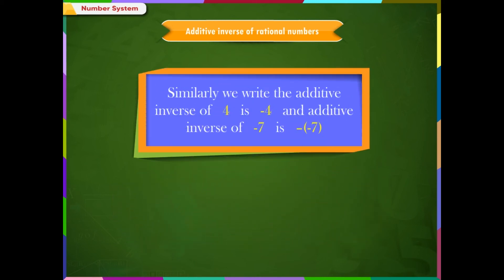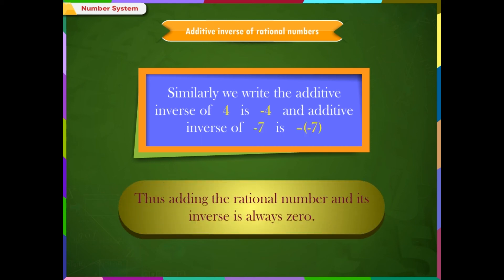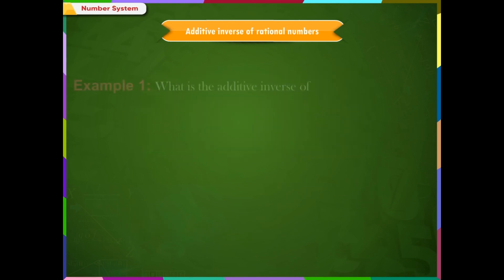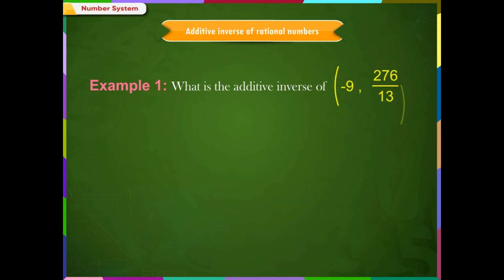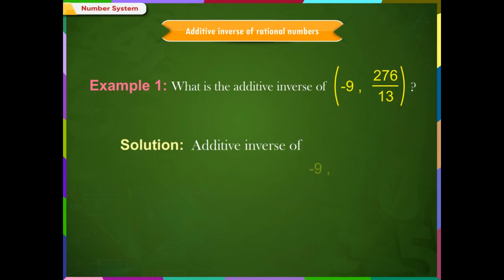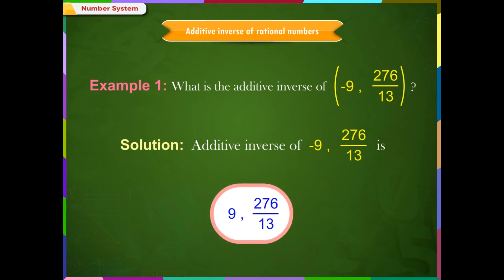Similarly, the additive inverse of 4 is -4, and the additive inverse of -7 is 7. Thus, adding a rational number and its additive inverse always gives 0. Example 1: The additive inverse of -9/76/13 is 9/76/13.